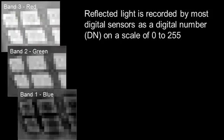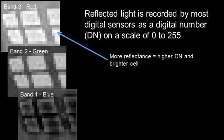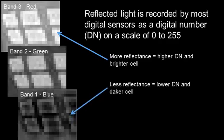Band 3, 2, and 1 — otherwise known as the red, green, and blue bands. The intensity of reflectance is recorded by the camera on a digital number scale of 0 to 255. The brighter the number, the higher the digital number, and the brighter the cell or pixel is. The less reflectance that occurs, the lower the digital number and the darker the cell.